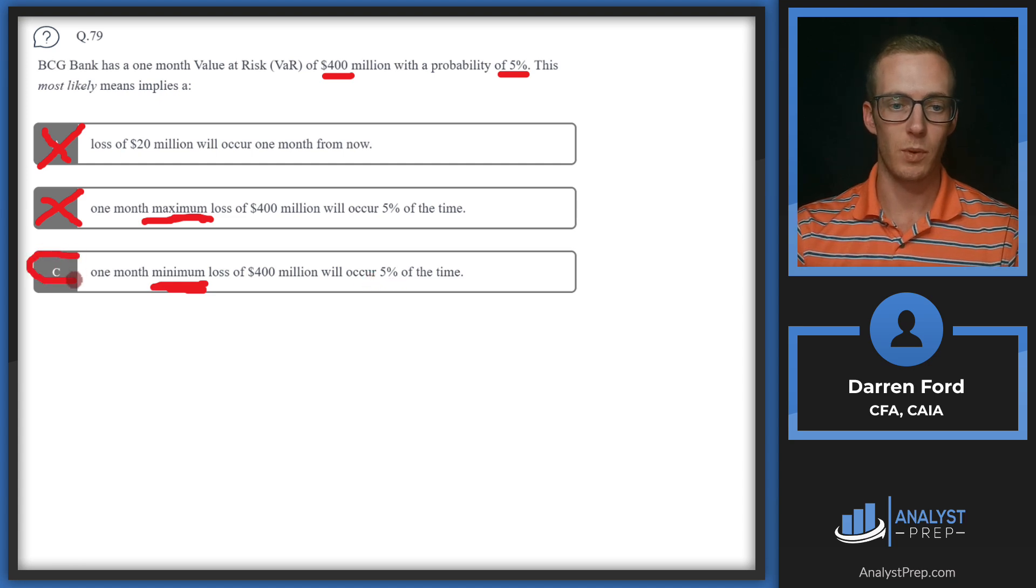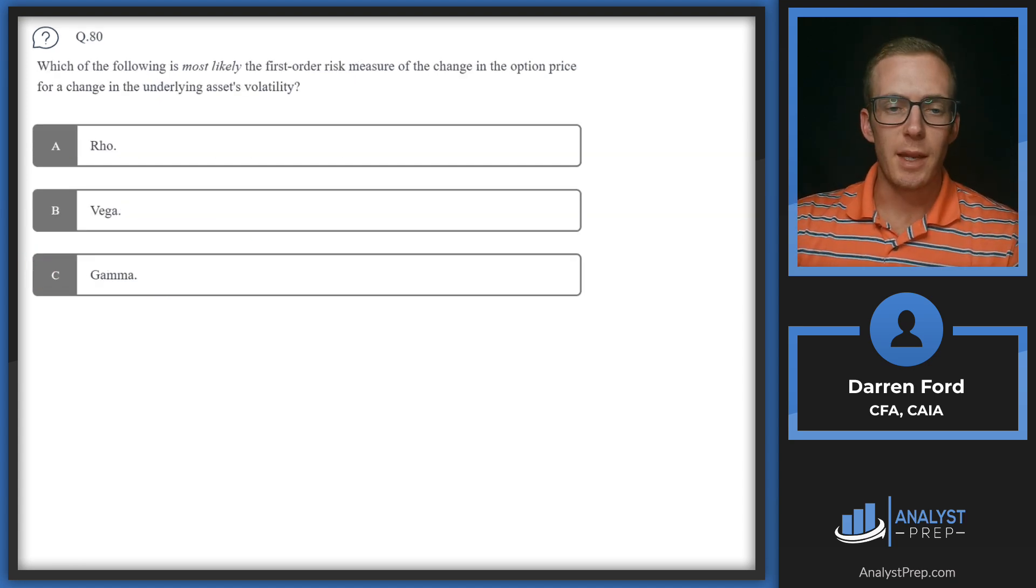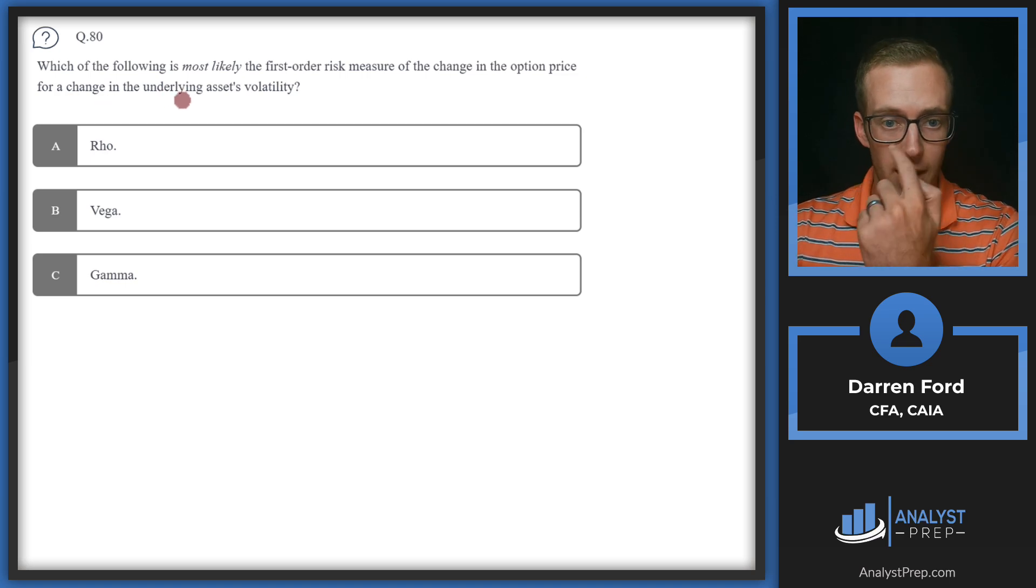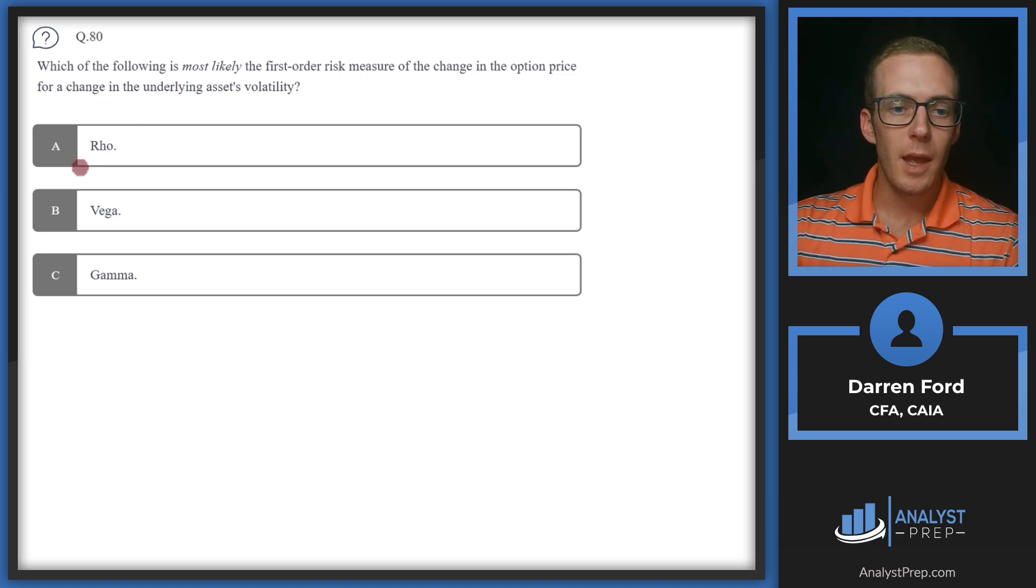Question 80: Which of the following is most likely the first-order risk measure of the change in the option price for a change in the underlying asset's volatility? A: Rho. Rho measures the change in interest rates, so it's not going to be related to volatility and it's also not going to be a first-order measure. We can cross off A.